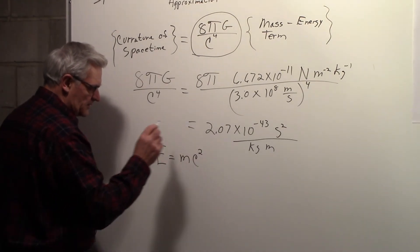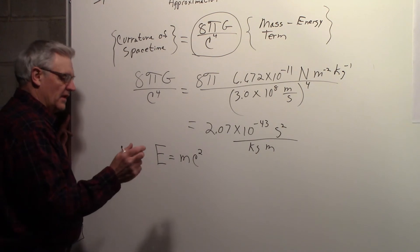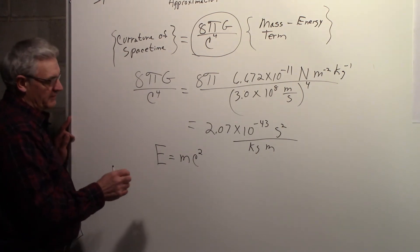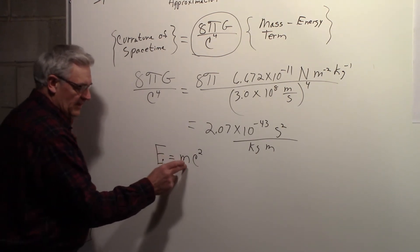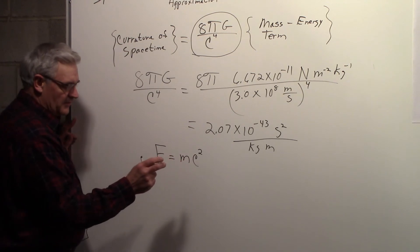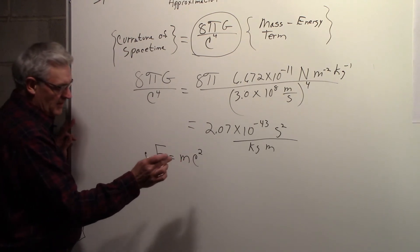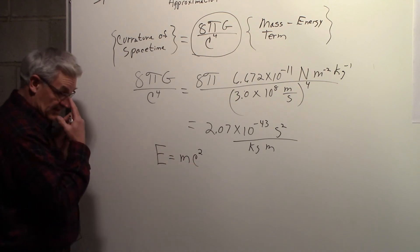everybody knows E equals mc squared, and you frequently hear the comment that a tiny bit of mass produces a lot of energy, because in this equation it's multiplied by c squared.